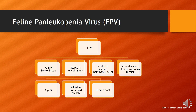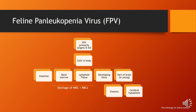FPV is related to canine parvovirus, which is why the disease is also called feline parvo. It causes disease in all felids, raccoons, and mink. FPV primarily targets, infects, and kills cells in the intestine, bone marrow, lymphoid tissues, developing fetus, and parts of the brain — mostly the cerebellum in young animals.